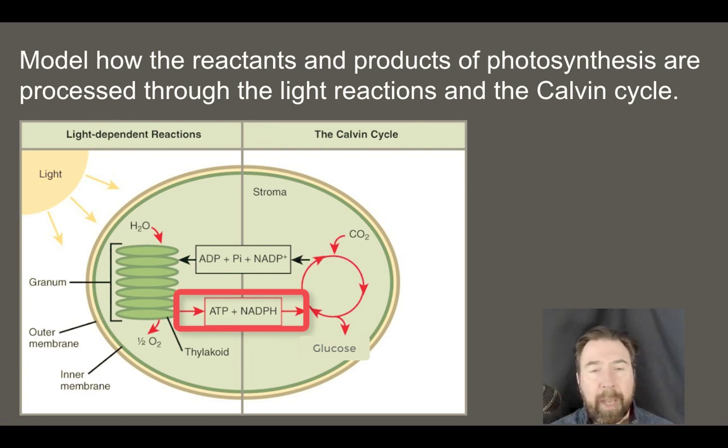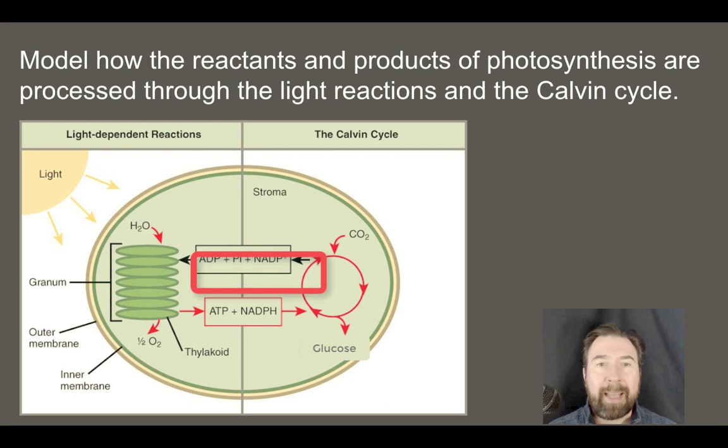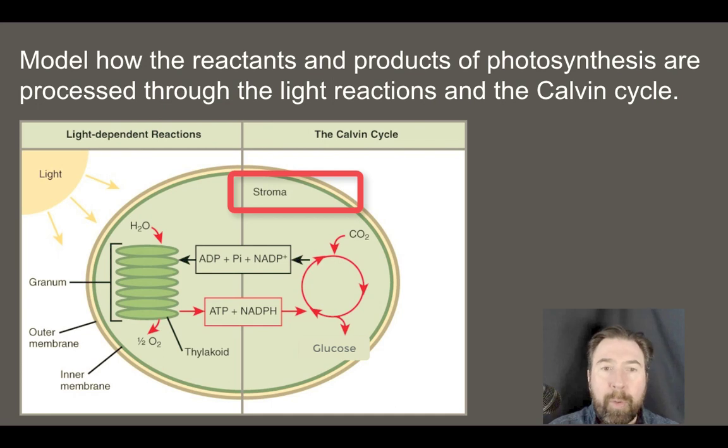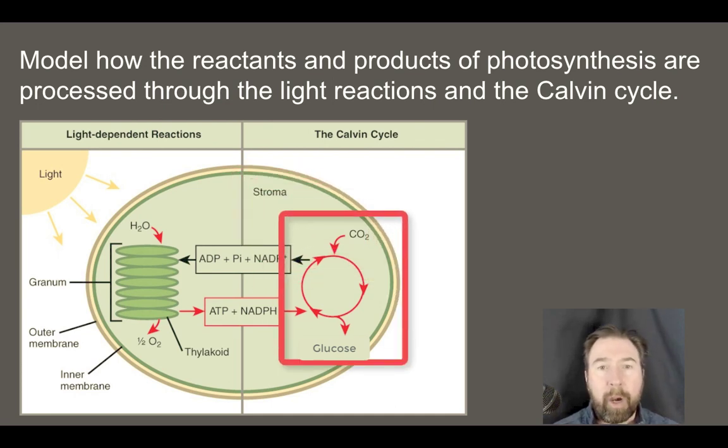The ATP and the NADPH will be removed from those thylakoids and they will head out into the stroma, the space outside those thylakoids. Those two ingredients will be used to power the conversion of carbon dioxide into three carbon sugars which eventually are put together to make glucose.